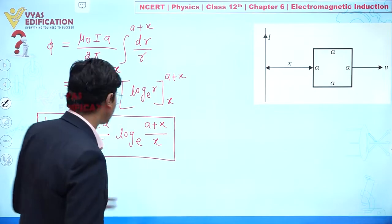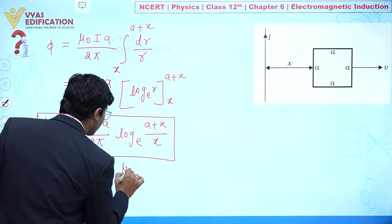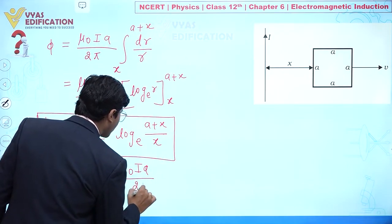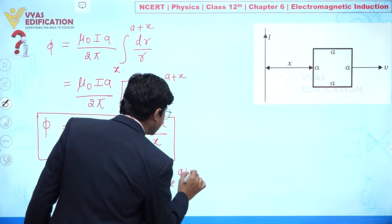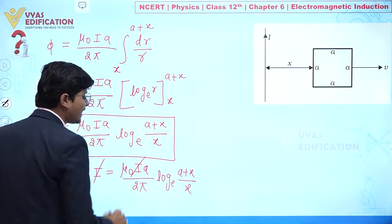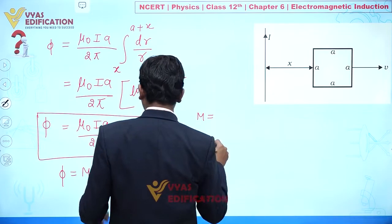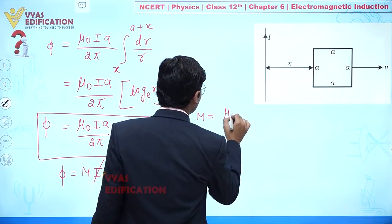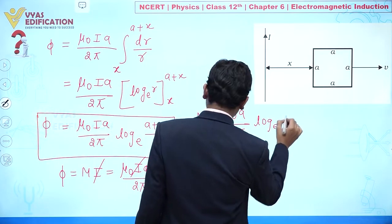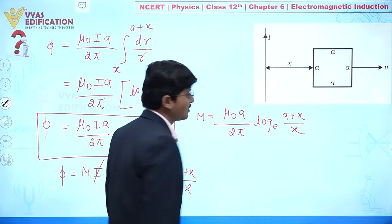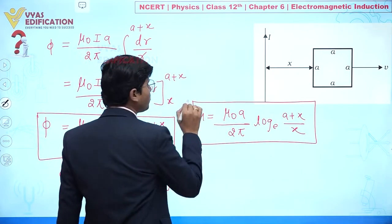Using φ = MI, we equate: MI = (μ₀Ia / 2π) · ln((a + x) / x). The current I cancels from both sides, giving mutual inductance M = (μ₀a / 2π) · ln((a + x) / x). This completes part A.